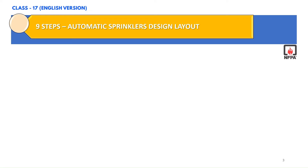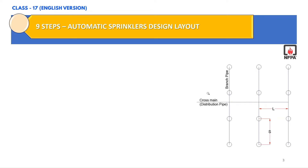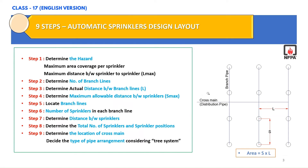Before we move forward with the 9-step formula, let us have a look at the screen. S represents the distance between sprinkler to sprinkler, and L represents the distance between branch lines. The area covered by one sprinkler is calculated using the formula: Area A equals S multiplied by L. Let us now have a look at the 9-step formula that is mandatory to place the sprinklers on any layout.